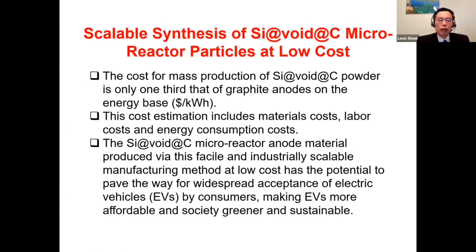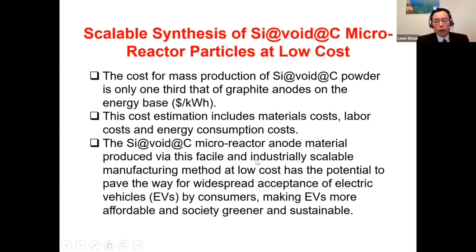Our cost estimation for mass production of these micro-reactor powders shows a cost of only one-third of graphite anode material on an energy basis. This includes material cost, labor cost, and energy consumption cost. This is a low-cost material with much better performance than graphite, and because the process is industrially scalable, it has the potential to pave the way for widespread acceptance of electric vehicles, making them more affordable and society greener and more sustainable.